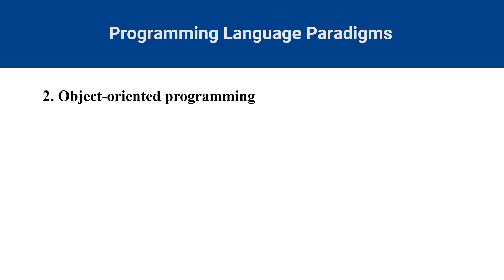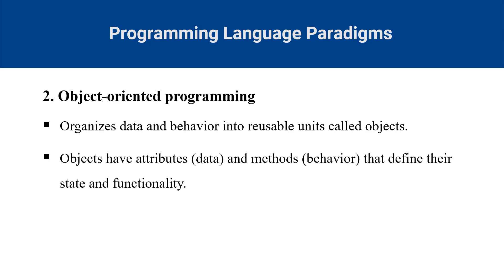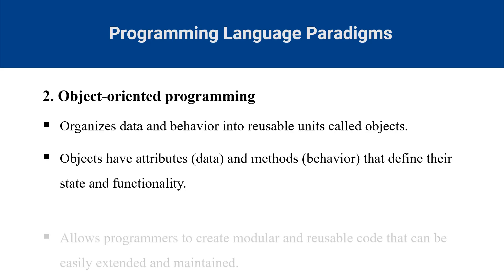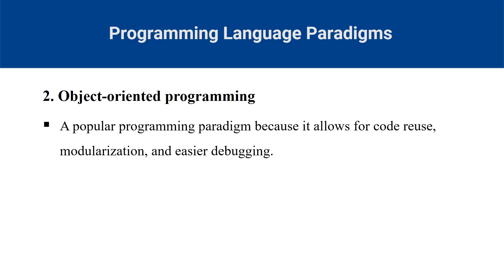Object-oriented programming, or OOP, is a paradigm that organizes data and behavior into reusable units called objects. Objects have attributes and methods that define their state and functionality. OOP allows programmers to create modular and reusable code that can be easily extended and maintained. OOP is a popular programming paradigm because it allows for code reuse, modularization and easier debugging. Some popular OOP programming languages include Java, Smalltalk and Ruby.